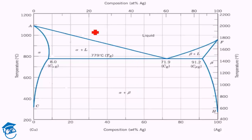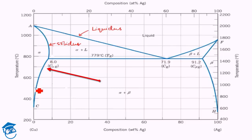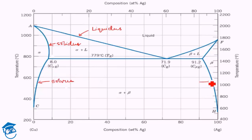This is the liquidus line, and this is the solidus line. Here we have an additional line separating the single-phase solid from the double-phase solid region — this is known as the solvus line. So we have the liquidus line, the solidus line, and the solvus line on both sides of the diagram.